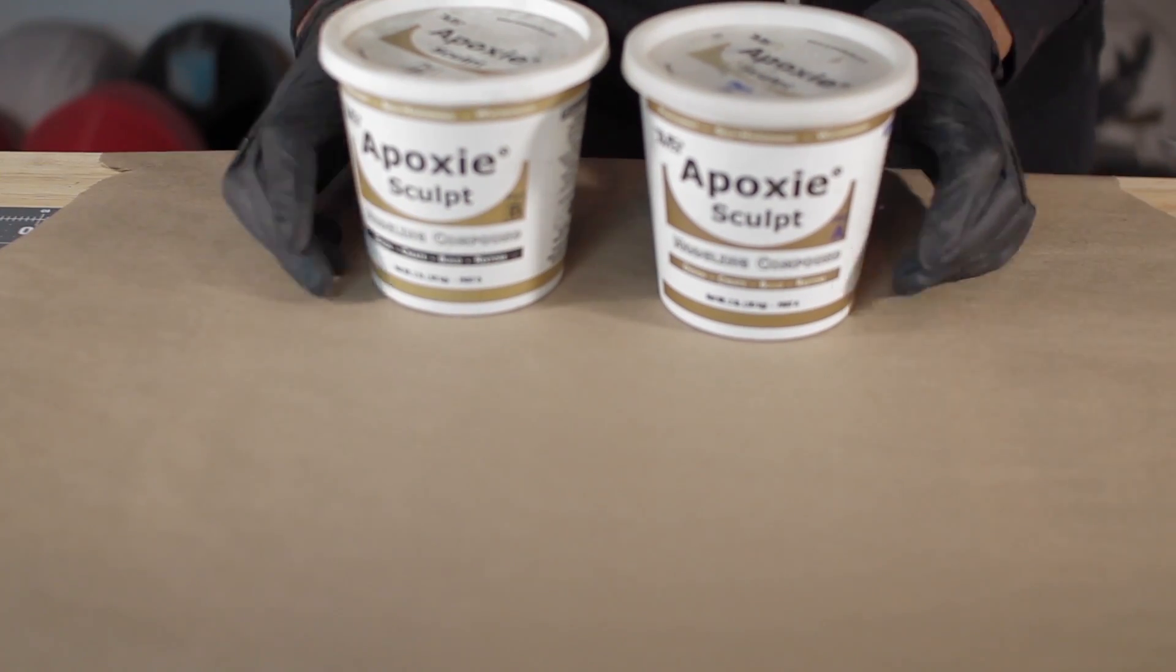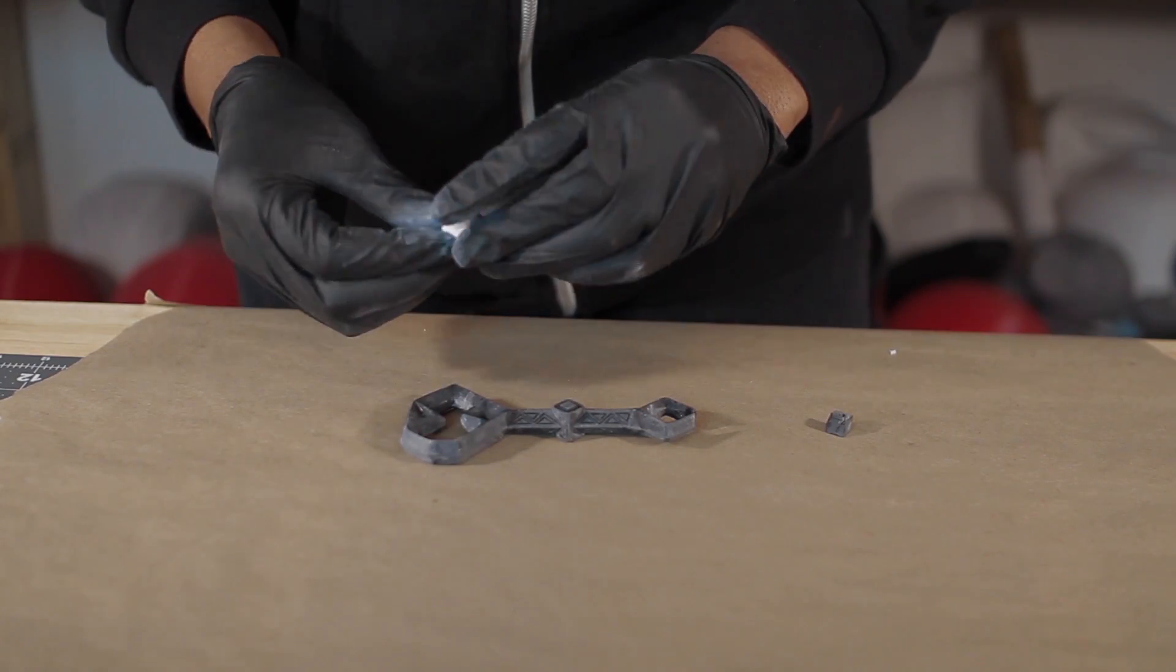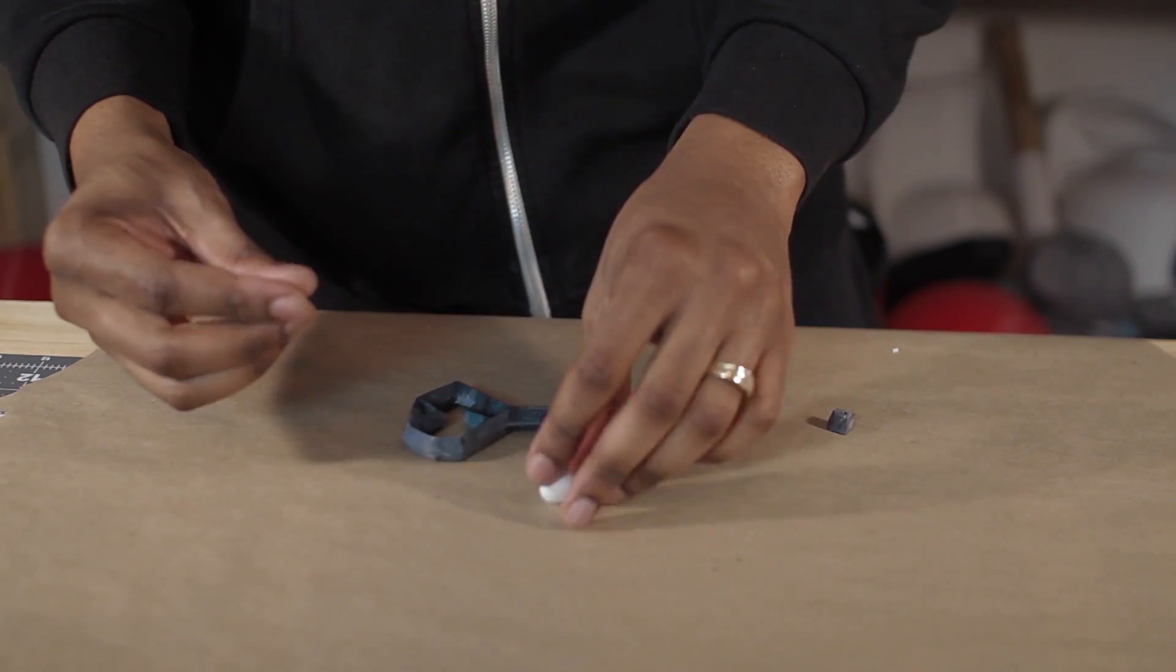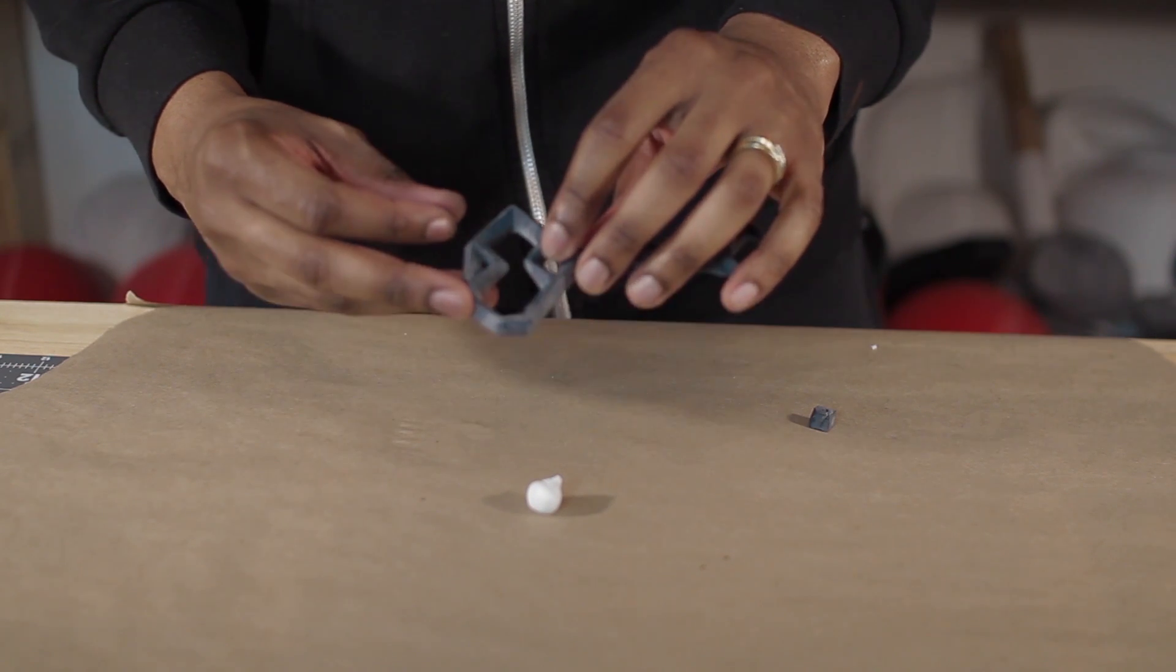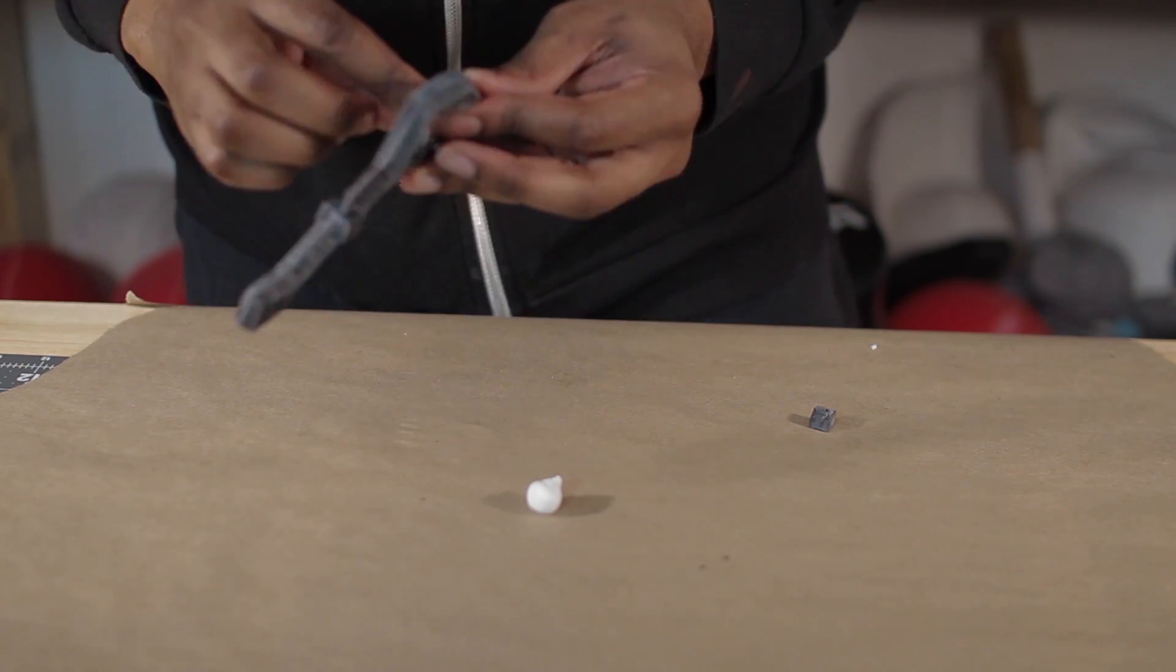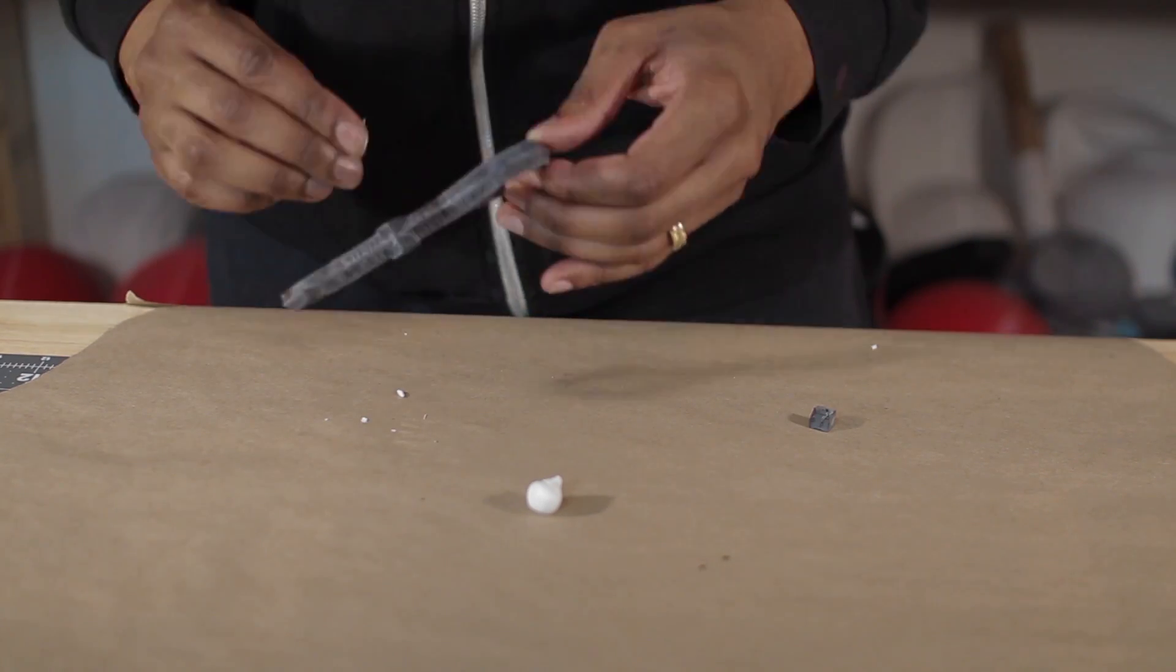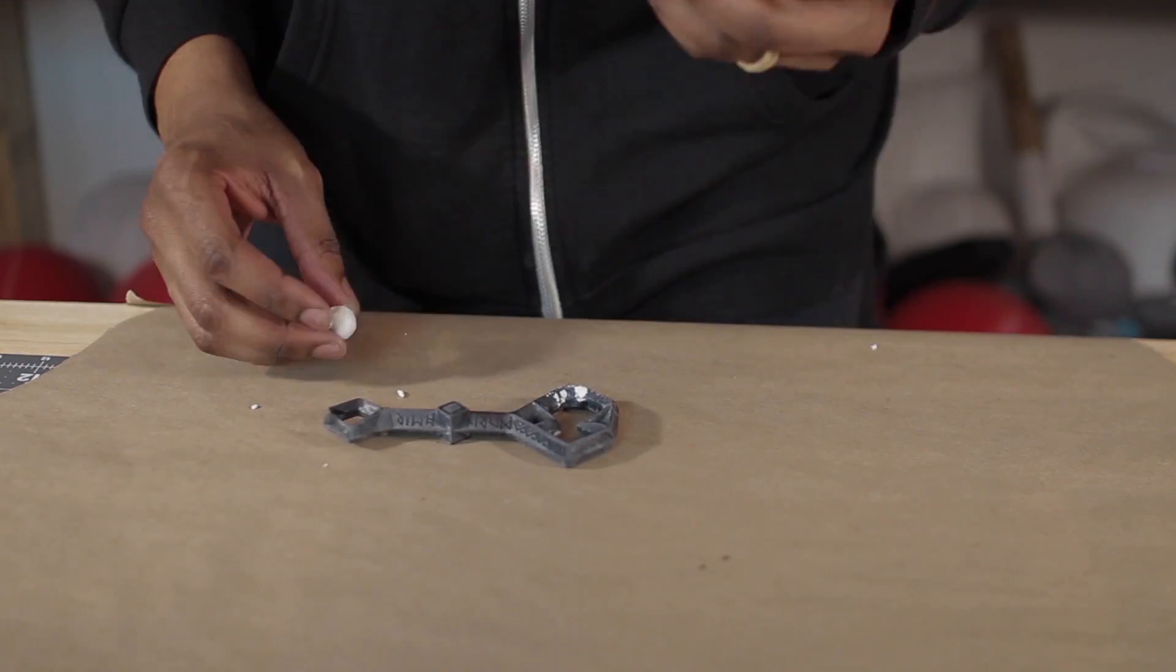I also used the popsicle stick method on smaller parts of the key. The holes we made to release resin from the print needed to be filled, so I mixed up equal parts of epoxy scope and proceeded to fill the holes. Once the holes were filled, I used some water to smooth and feather out everything.